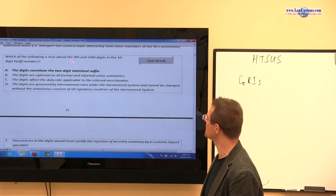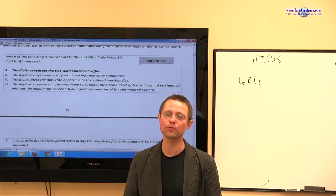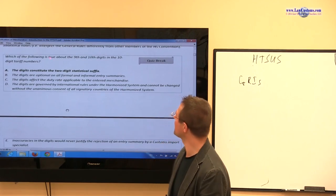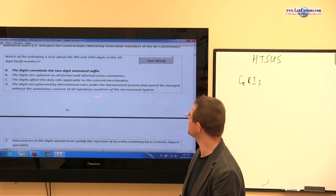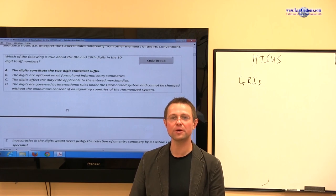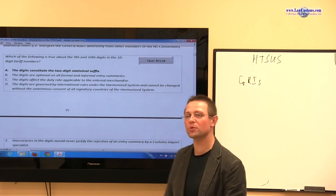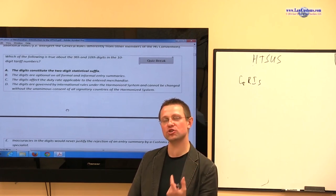So, B says the digits, the 9th and 10th, are optional on formal and informal entry summaries? No. If you are going to classify and the number is 10 digits, the digits are not optional. The only way they can be optional, if there is, for example, informal entry, but it's a special type of entry,